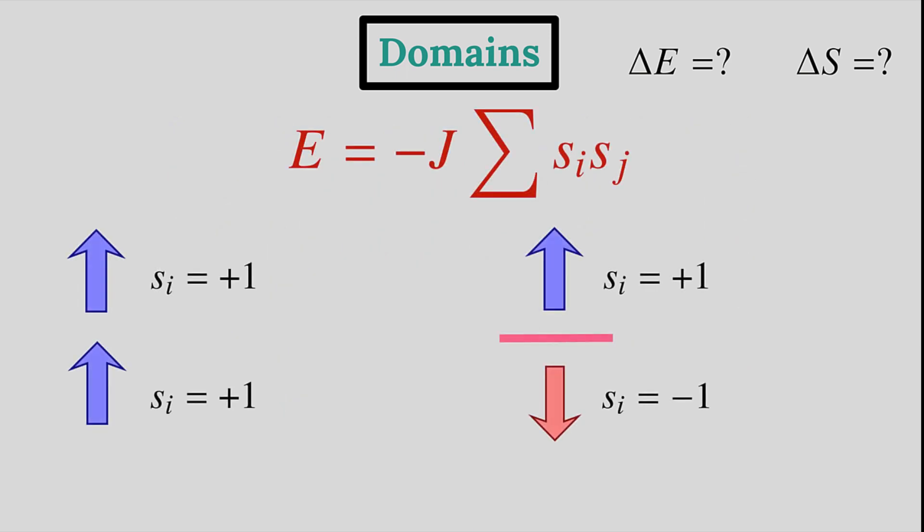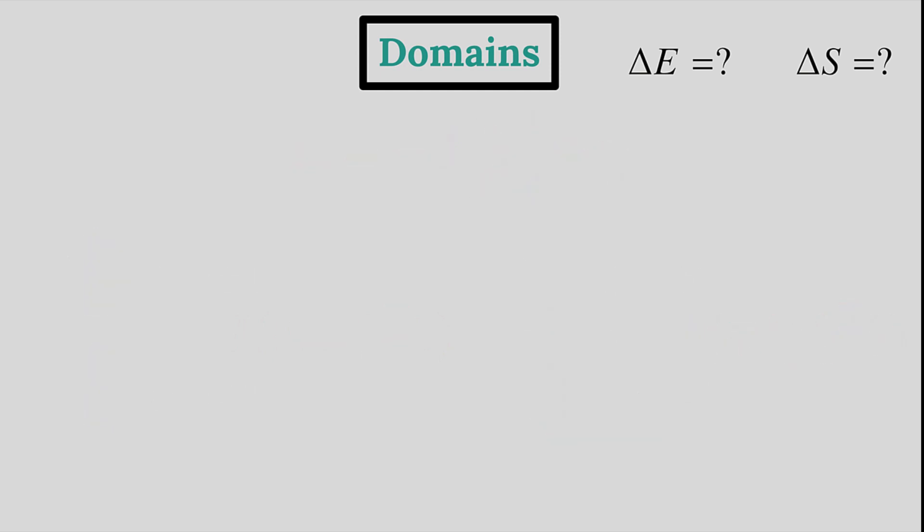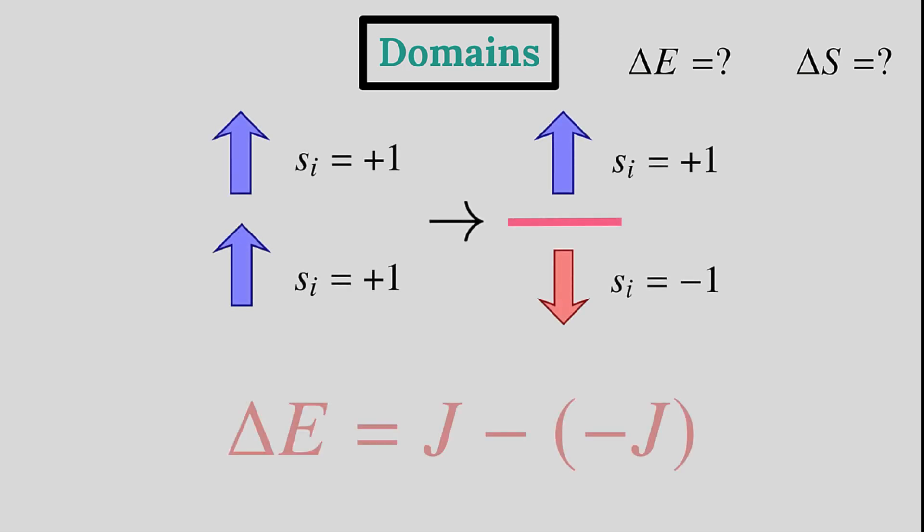The energy contribution from same spin interactions is minus J, whereas that from opposite spin interactions is plus J. We just found that for one change of interaction, the associated change of energy, which is the energy before minus the energy after, is plus 2J.